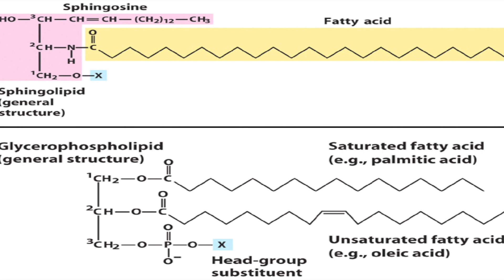One important lecithin derivative is dipalmitoylphosphatidylcholine, which is a key component of surfactant that maintains the surface tension of the alveoli. Sphingolipids have a sphingosine backbone with carbons 1, 2, and 3; the second carbon is attached to a fatty acid. If the first carbon is attached to a phosphate and a functional group, that forms a sphingophospholipid. I hope this video has helped you understand the classification of fatty acids and lipids in a simple and easy way. Thanks for watching, see you in my next video.